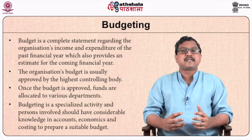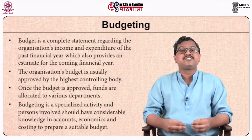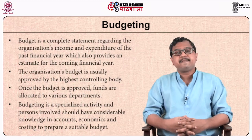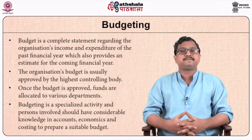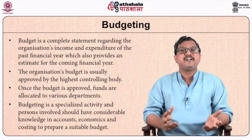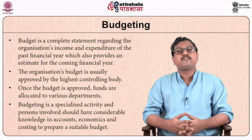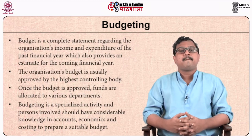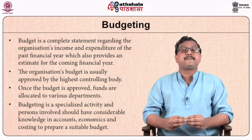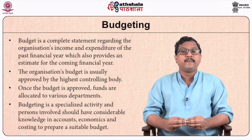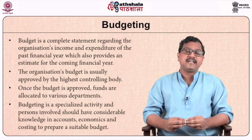The seventh function of administration is budgeting. A budget is understood as a complete statement regarding the organization's income and expenditure of the past financial year, which also provides an estimate for the coming financial year. The organization's budget is usually approved by the highest authority, that is the governing board. Once approved, allocation of funds to various departments takes place. Budgeting is a specialized activity which involves considerable knowledge of basic accounting, economics, and costing.